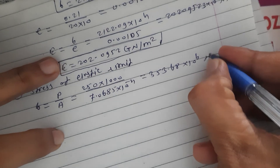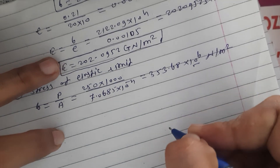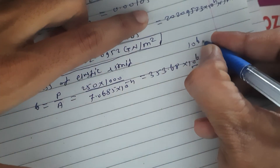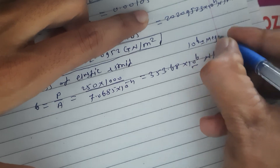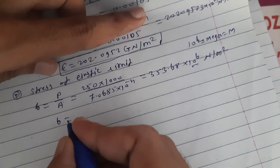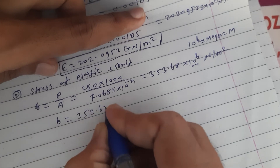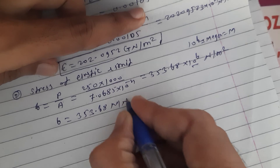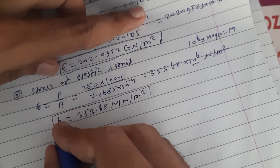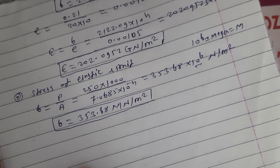This value is in newton per meter square. Since 10 raised to 6 equals mega, you get the stress at elastic limit as 353.68 mega newton per meter square.